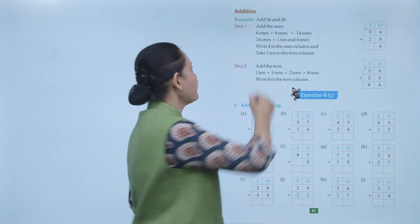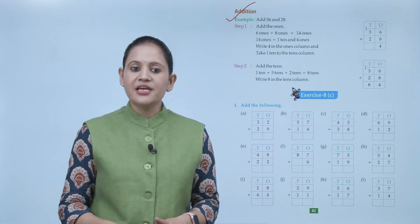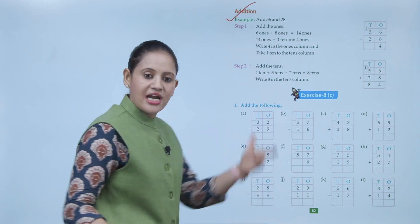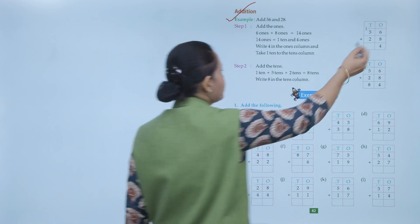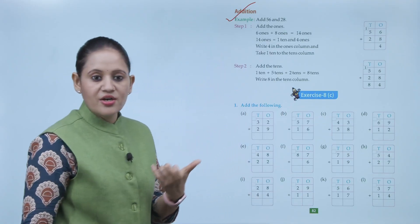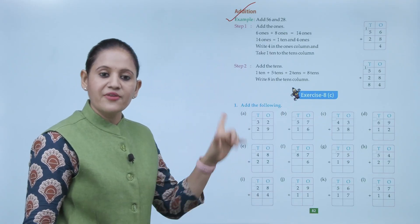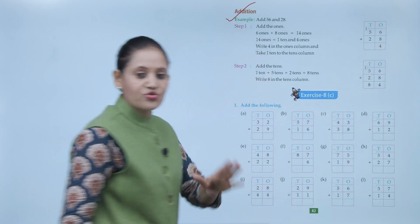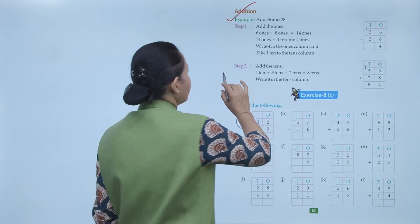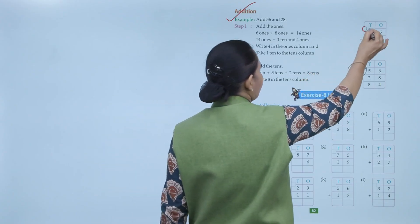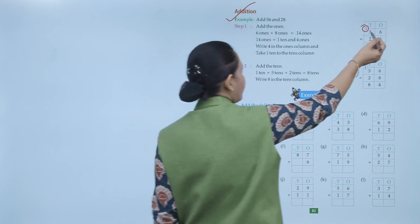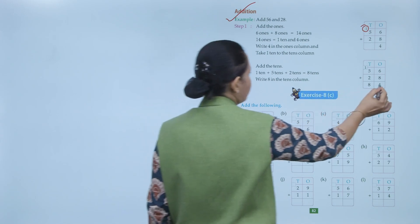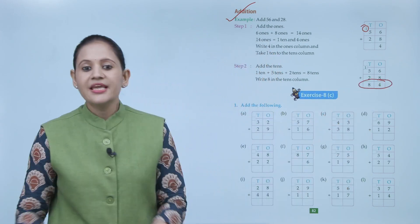Next: addition. We will take an example — add 56 and 28. First we add the ones: 6 plus 8 equals 14 ones. We write 4 at the ones place and carry over the 1 ten to the next column. Now add the tens: 5 plus 2 is 7, plus the carried 1 equals 8. So the answer is 84. Clear?